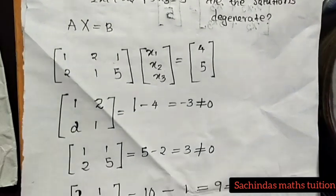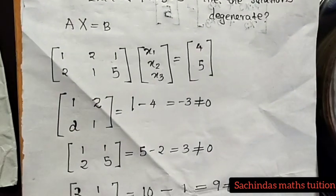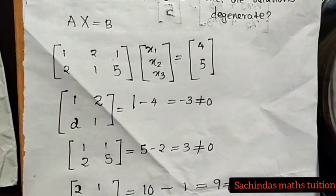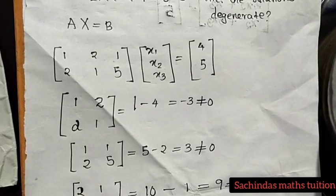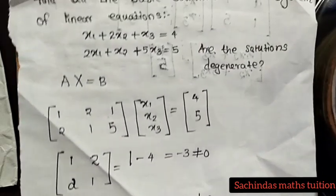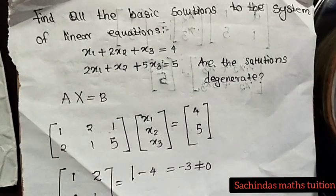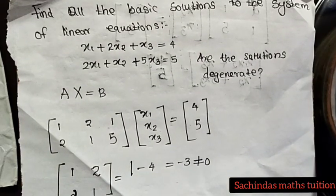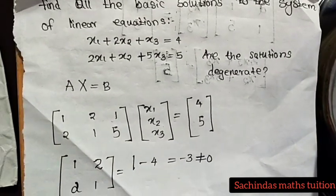Then x is equal to b. The problem is a linear equation system of the form Ax equals b.